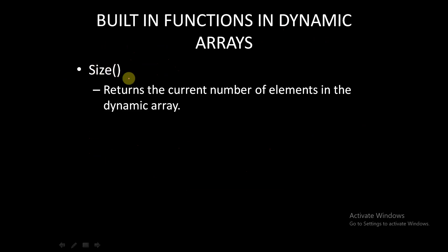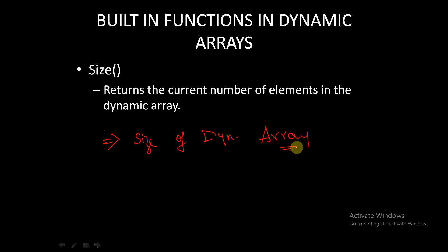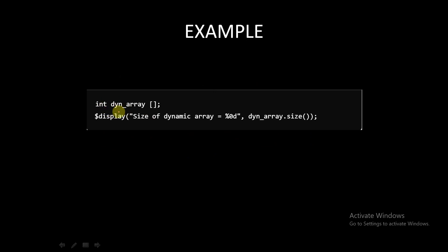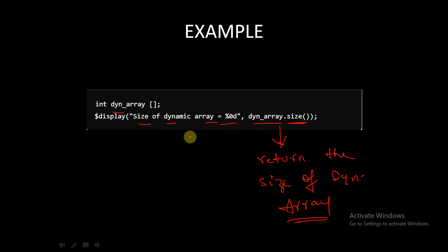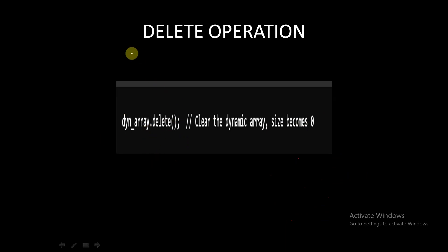The first built-in function is size. It returns the current number of elements in the dynamic array. For example: $display("size of dynamic array = %d", dyn_array.size()); This will return the size of the dynamic array. Using the dot size built-in function we get the size of the dynamic array.